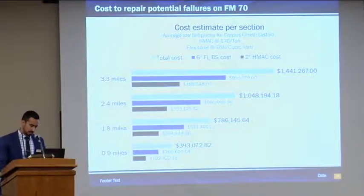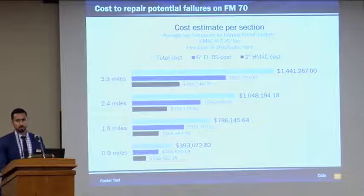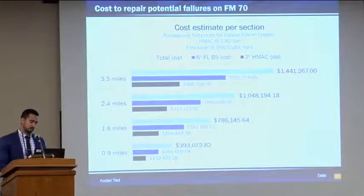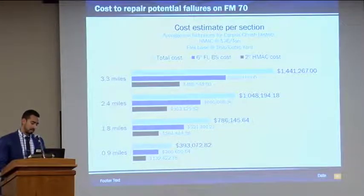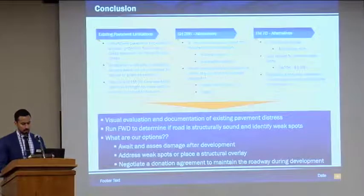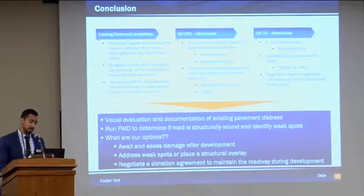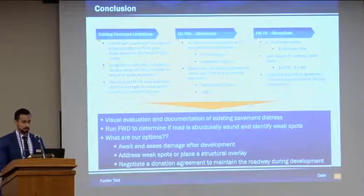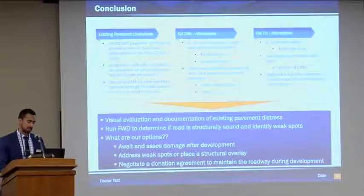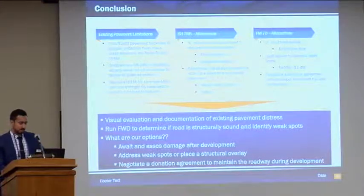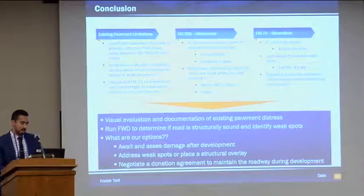Let's talk about cost. This is just to make the road traversable — to replace those failures with six inches of flex base and two inches of hot mix. As you can see, it can range from around $400,000 up to $1.4 million. In conclusion, the limitations are insufficient pavement thickness to provide protection from those heavy loads. The subgrade is weak on SH-26, and some sections in FM 70 were identified with low strength on the base, which could lead to failures. There are alternatives for State Highway 26: a five-inch structural overlay to meet the TxAxle check, which is not feasible — it's too expensive, and the subgrade is weak so it could fail anyway.